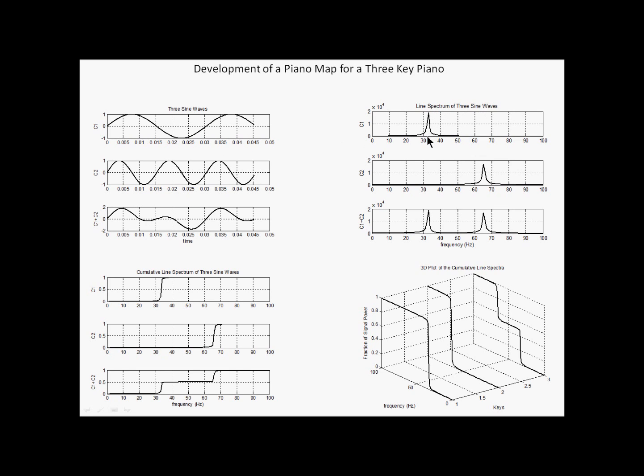Here's the line spectrum. C1 has a spike at 32.7 hertz, C2 has a spike at 65 around there. And the special key has spikes at both frequencies.